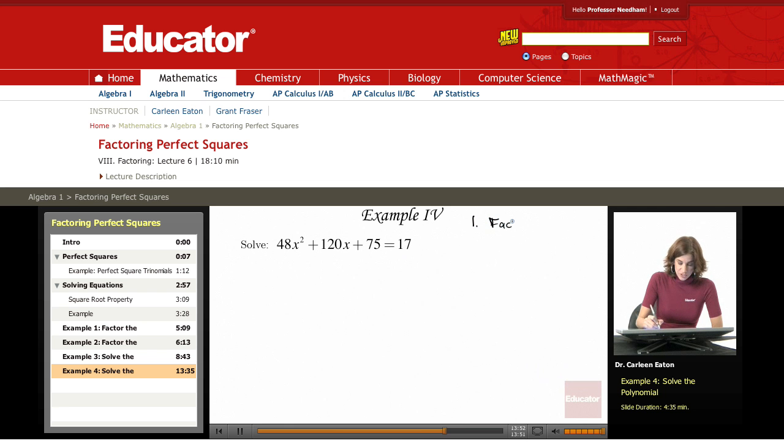So I'm going to factor out the greatest common factor. And I do have a common factor of 3 that can be factored out from this. So the greatest common factor equals 3. So I'm going to rewrite this as 3 times 16 is 48. Can't factor out any variables because there's no x term with the 75.